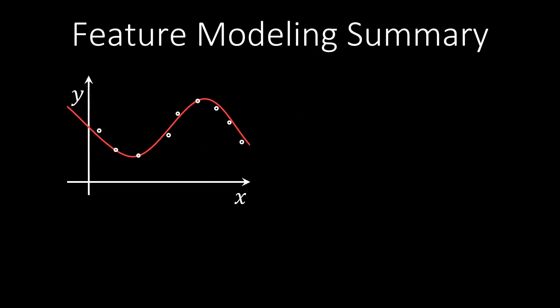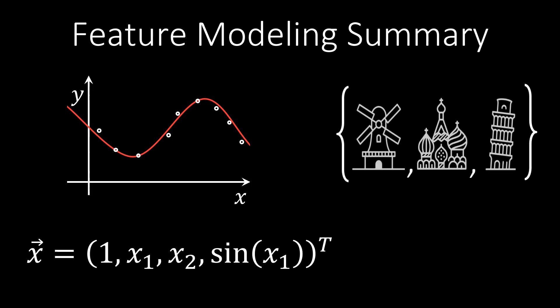Let us summarize the main insights of this video. If our data behaves non-linearly in a given input dimension, we may wish to model this non-linear behavior. To do so, we can augment our input feature vector by adding functions of the input that represent the non-linearity we wish to model. Additionally, if certain input features come from a discrete set of options, we can model this as a one-hot encoding.